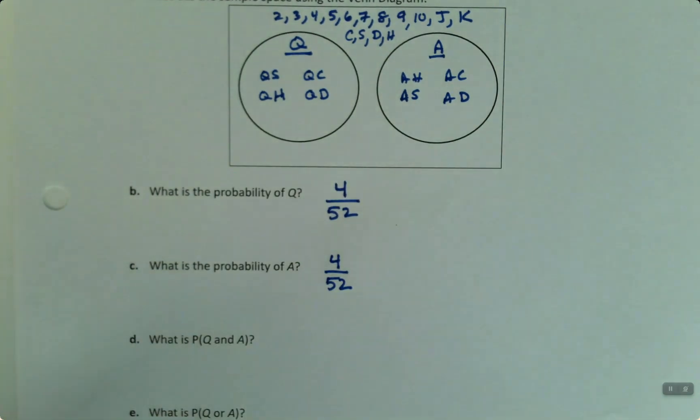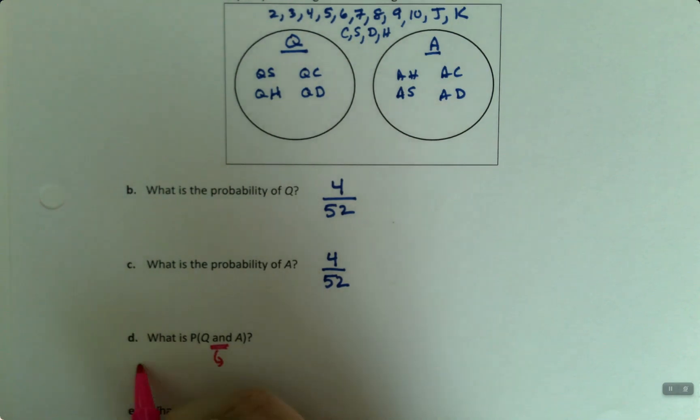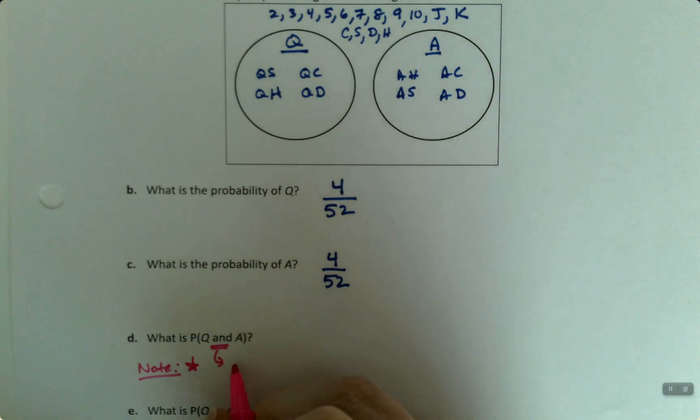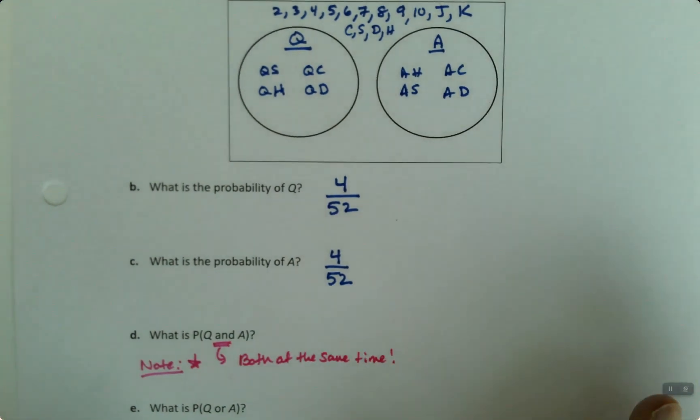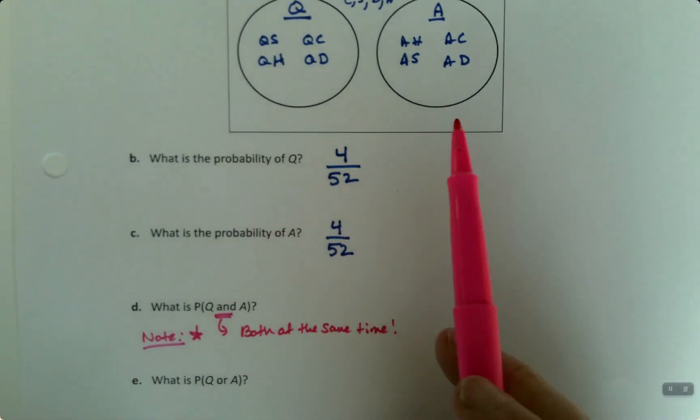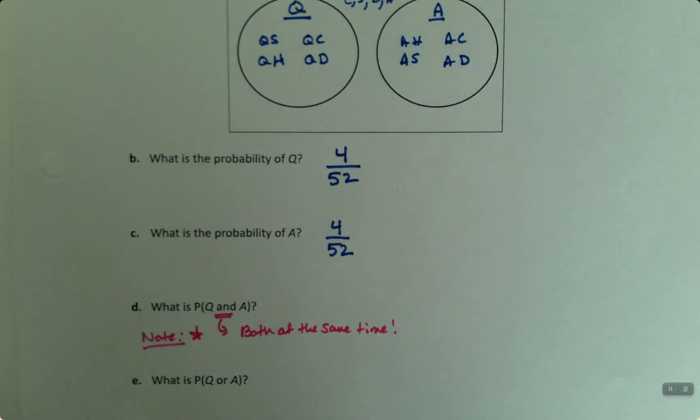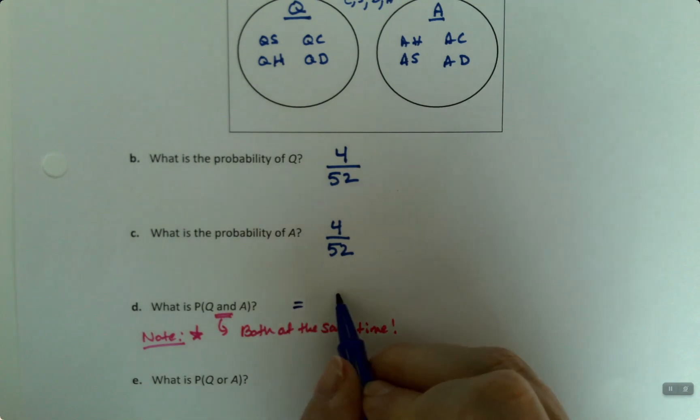So then what is the probability of Q and ace? So this would mean, when you see the and, it means that you have to have both at the same time. That's the way it works in statistics and probabilities. Both at the same time. So you'd have to manage to be both a queen and an ace at the same time, which obviously cannot happen. Therefore, it's zero out of 52, or just zero.